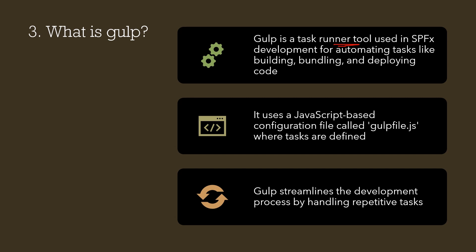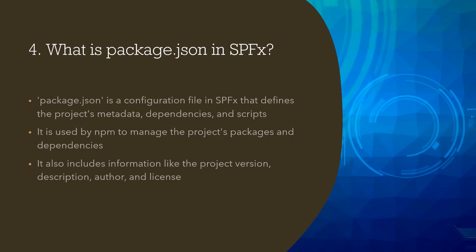Gulp uses a JavaScript configuration file called gulpfile.js, where tasks are defined. The main use of Gulp is that it streamlines the development process by handling repetitive tasks, for example building and deploying.